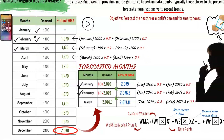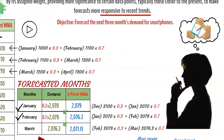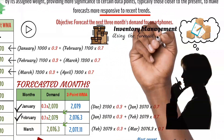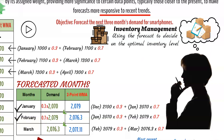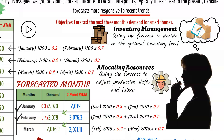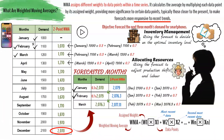Now that we have forecasted demand for the next three months, what other informed decisions can the operations manager make using the two-month weighted moving average? The operations manager can use this data for different scenarios. By forecasting demand, they can maintain an optimal level of inventory — ordering and stocking sufficient materials or finished products if demand is expected to increase. They can also allocate resources such as labor and equipment based on forecasted demand, adjusting staffing levels and production shifts accordingly. This reduces the risk of last-minute adjustments and potential disruptions in operations and the supply chain.